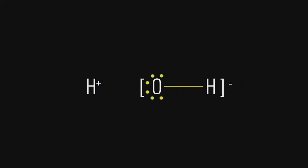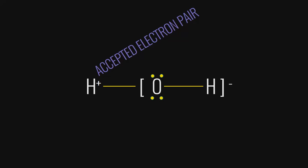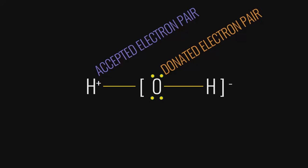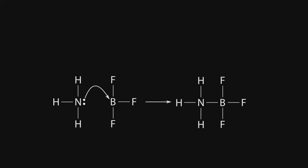We have our hydroxide ion and our H+ ion. In this reaction, the hydroxide ion donates one of its lone pairs of electrons to the H+ ion, and they bond together to form one water molecule. The H+ accepted the electron pair, making it the Lewis acid, while the hydroxide donated its electron pair, making it the Lewis base. H+ had an empty orbital to fill.